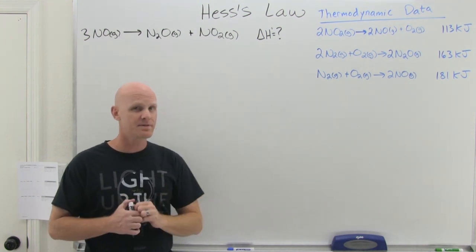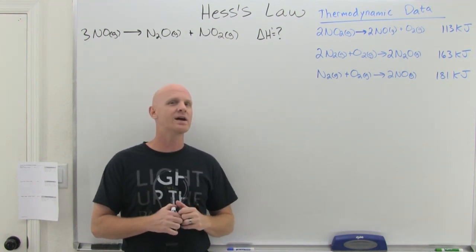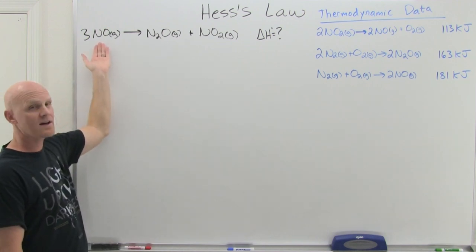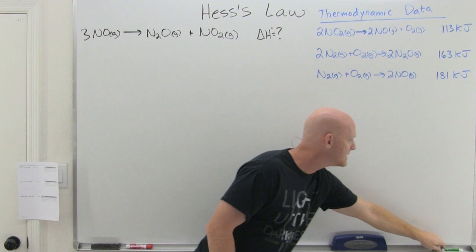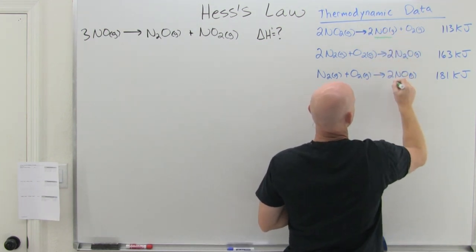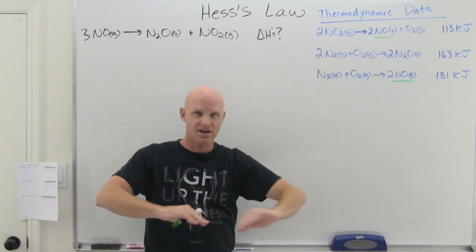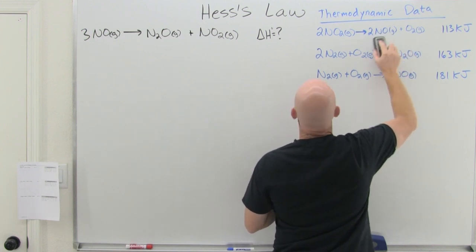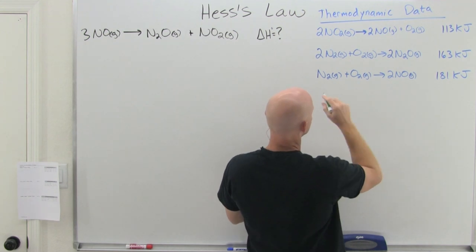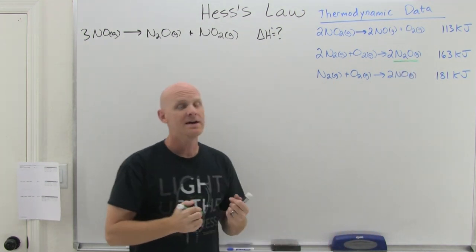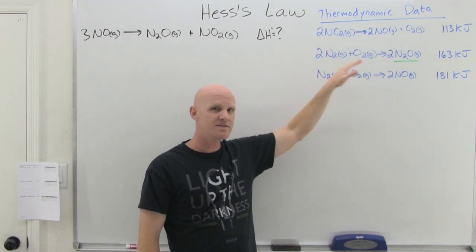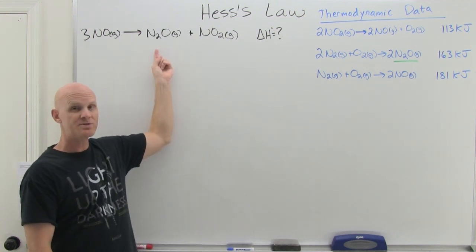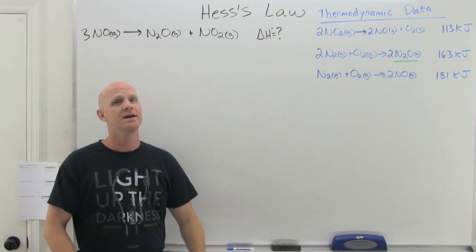If adding up some combination of these reactions adds up to exactly this reaction, then adding up their delta H values will add up to the delta H of the reaction we're looking for. There is a method to the madness - it is not random. I usually like to start with the first species in your reaction, which is NO gas in this case. We look at where NO gas is showing up, and it shows up in two of the provided reactions. If it shows up in more than one, you skip it - that's the last thing you want to worry about balancing. So we skip NO and move on to N2O.